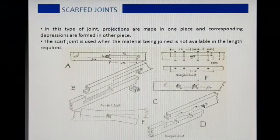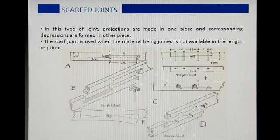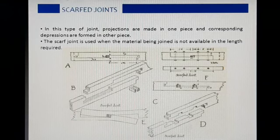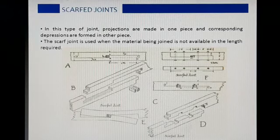इस प्रकार हमने तीन तरह के lengthening joints आज इस lecture में पढ़े: पहला था lap joint, दूसरा था fish joint, और तीसरा है scarf joint. इस प्रकार से lengthening joint तीन प्रकार से बनाया जा सकता है.